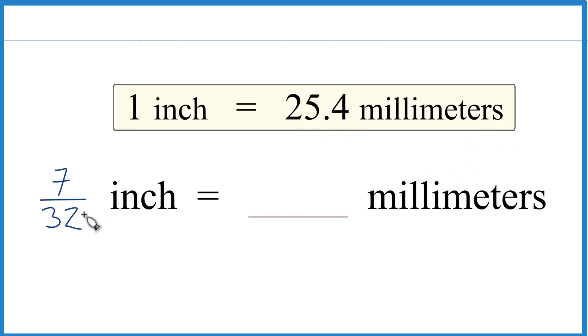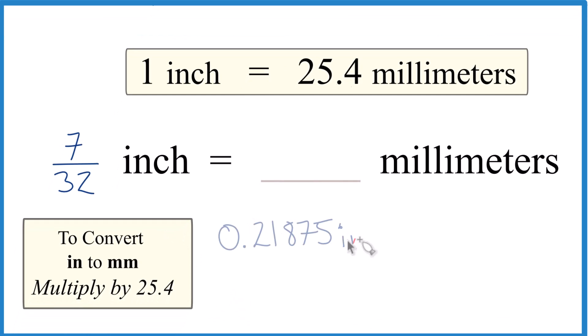That'll give us our answer. It's easiest usually if we convert this to a decimal first. So 7 divided by 32 equals 0.21875 inches. Multiply that by 25.4 millimeters. And note that 25.4 millimeters equals 1 inch. So we could say millimeters per inch, and this is our conversion factor.